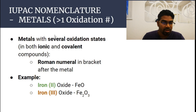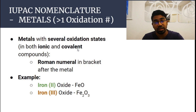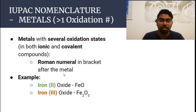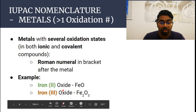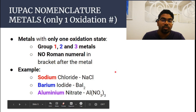First, let's look at how to name metal ions. For metals that have more than one oxidation number — in both ionic and covalent compounds — the Roman numeral is written in brackets after the metal. For example, iron is a metal with several oxidation states. If we are talking about iron with an oxidation state of plus two, then we write iron(II) oxide. If we are talking about iron with an oxidation state of plus three, then we write iron(III) oxide.